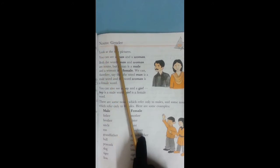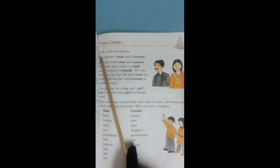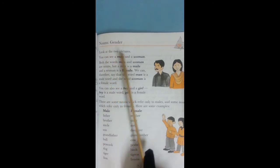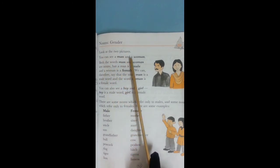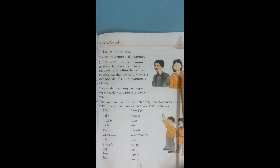Gender means masculine and feminine. Look at the two pictures. You can see a man and a woman. Both the words man and woman are nouns. But a man is a male and a woman is a female.